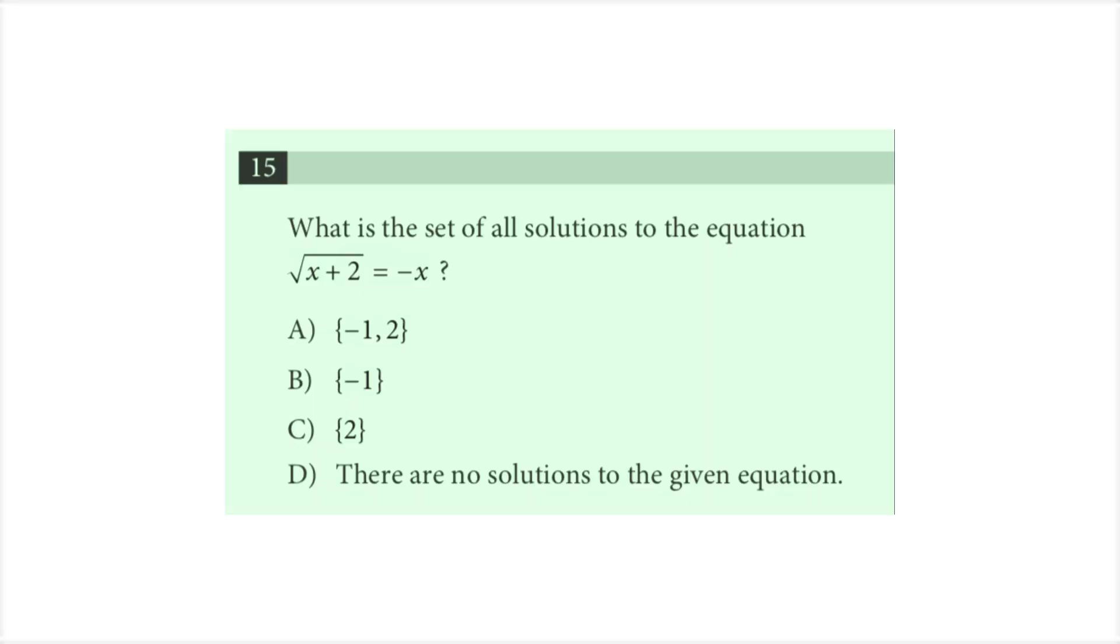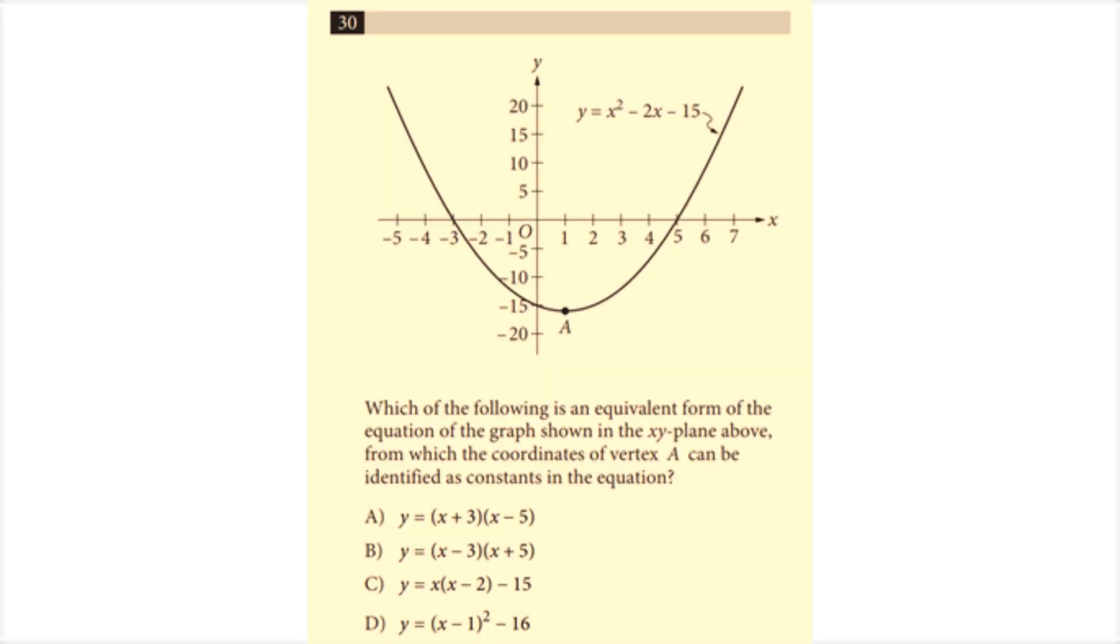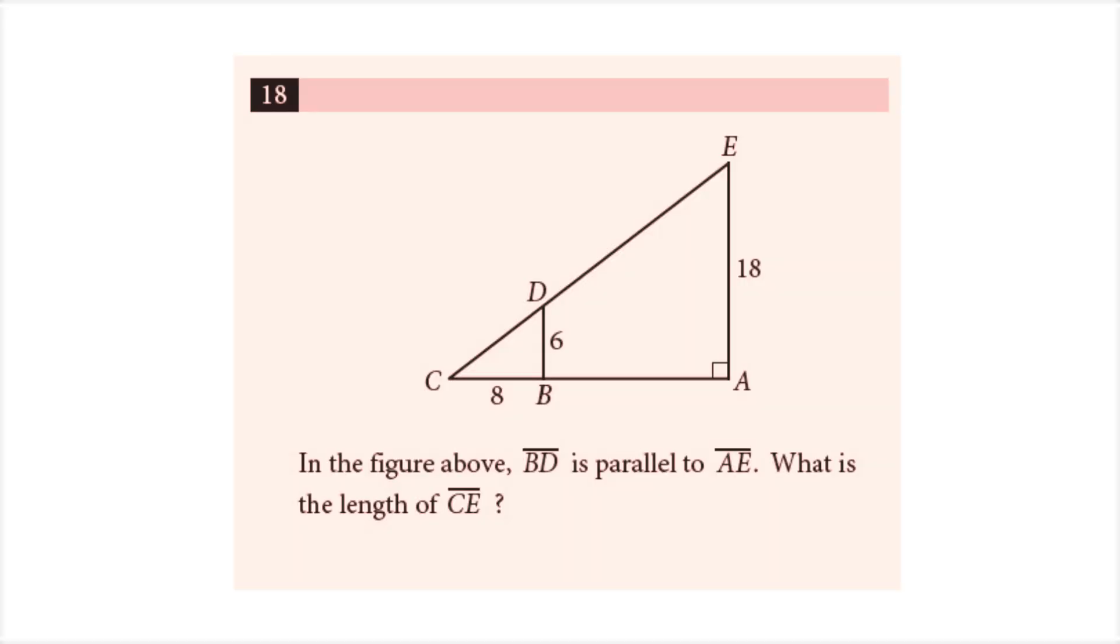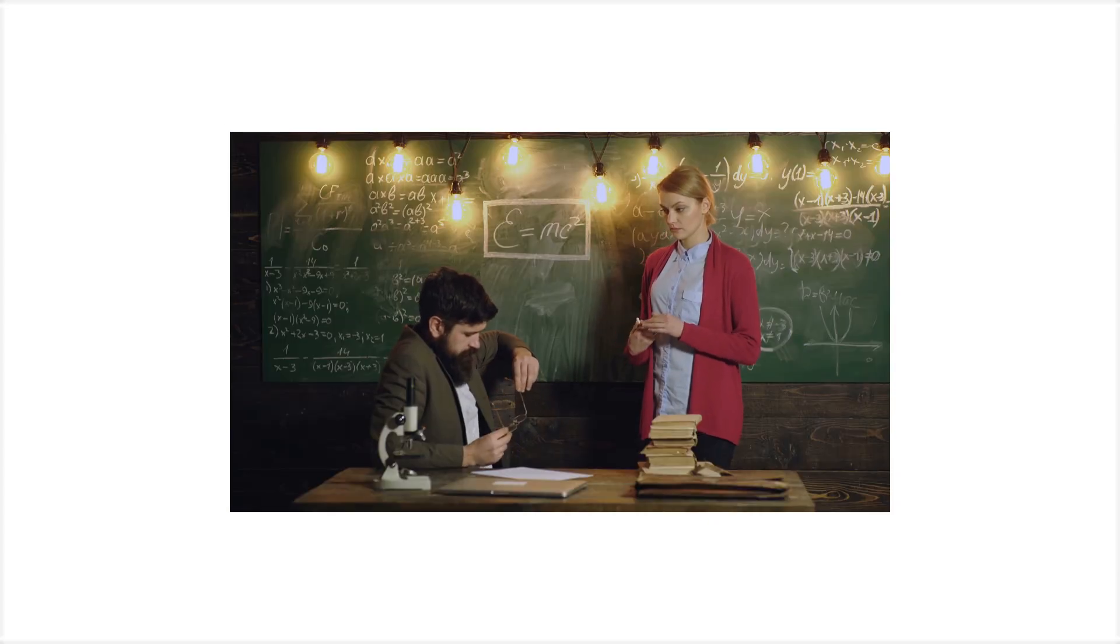College Board splits the topics into four categories: algebra, problem solving and data analysis, advanced math, and the hardest, geometry slash trigonometry. In this video, I'm going to teach you how to beat each section and reveal College Board's secret formula. So let's get to it.